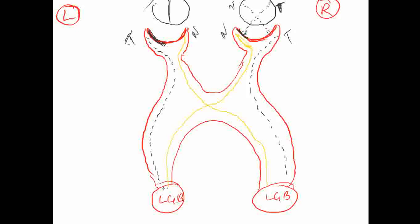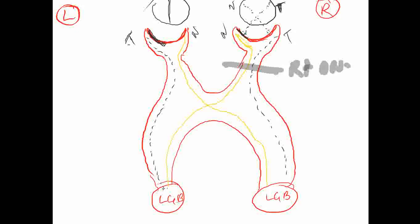Let us study the defects one by one. The first defect would be at the right optic nerve — total blindness in the right eye. There will be ipsilateral loss. One important rule to remember: before the optic chiasma, everything is lost as ipsilateral, and beyond the optic chiasma, everything will be contralateral.